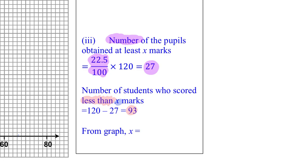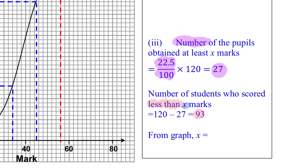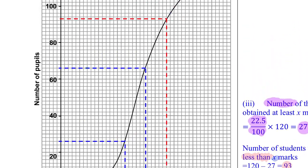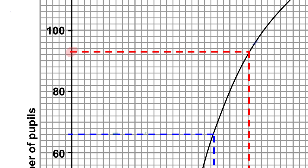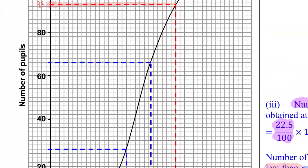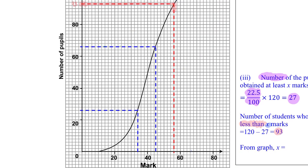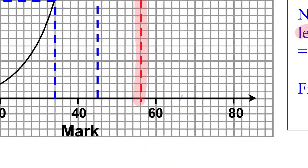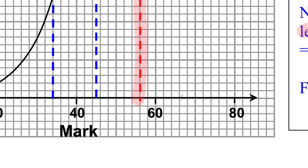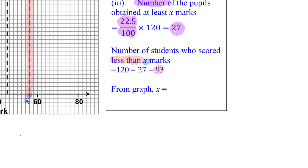Now that I know there are 93 students who scored less than x, I go back to the graph and find the point at 93 on the cumulative frequency axis. Following the dotted line across to the curve and down, I can read off the x value. At this point, x equals 56.